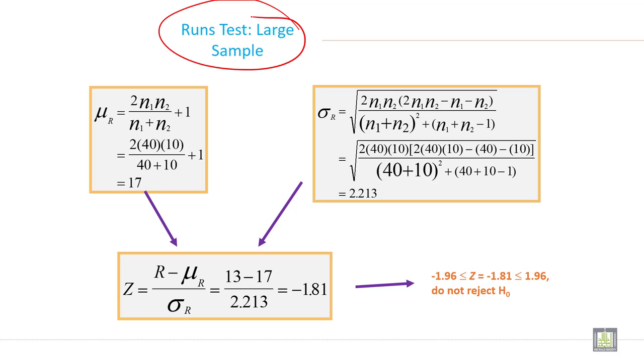How we can go for large sample? This is the formula we can calculate: 2N1N2 divided by N1 plus N2, plus 1.